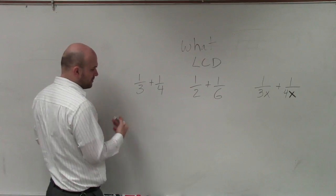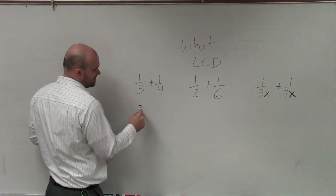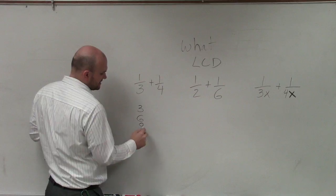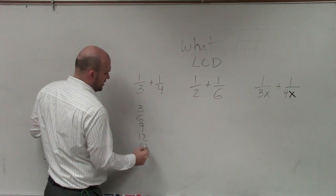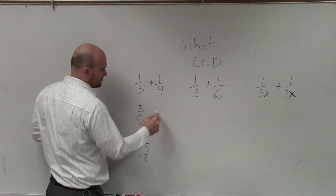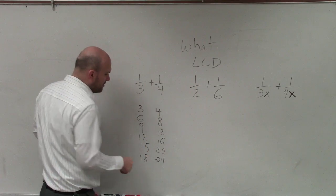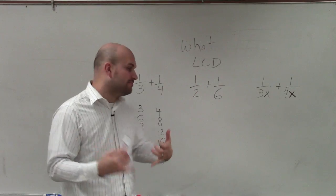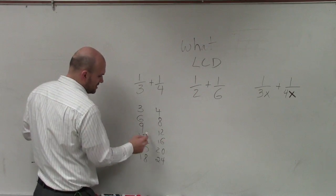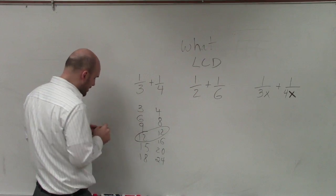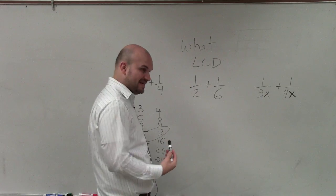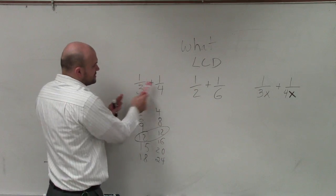One of the first things when we're learning this is we just kind of list the multiples: three, six, nine, twelve, fifteen, eighteen, and then I do four, eight, twelve, sixteen, twenty, twenty-four. And what we want to do is find the smallest number that they both share, which would be their multiples, which you guys can see here is twelve.